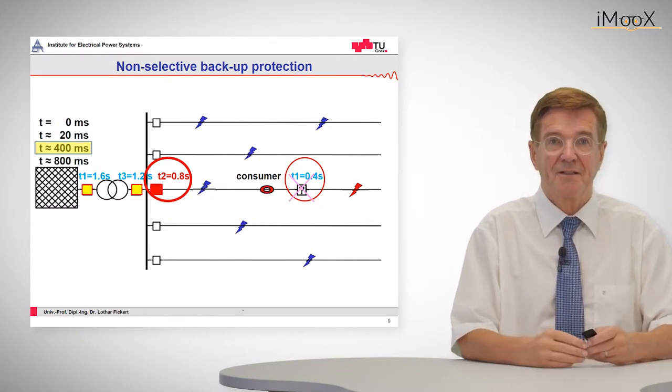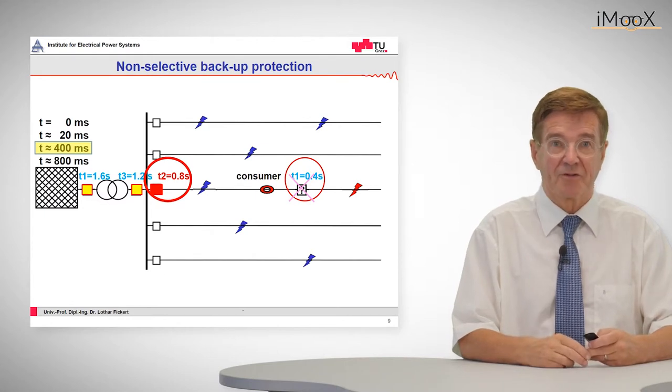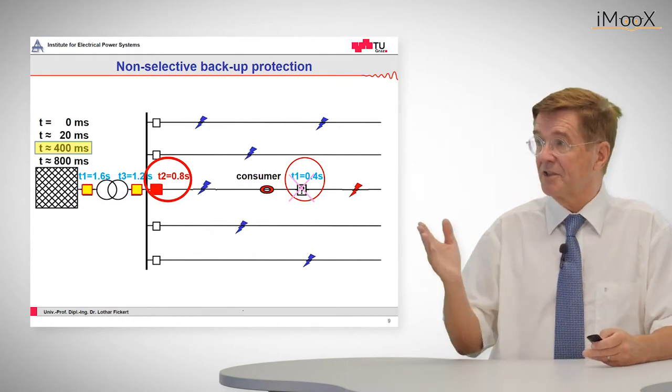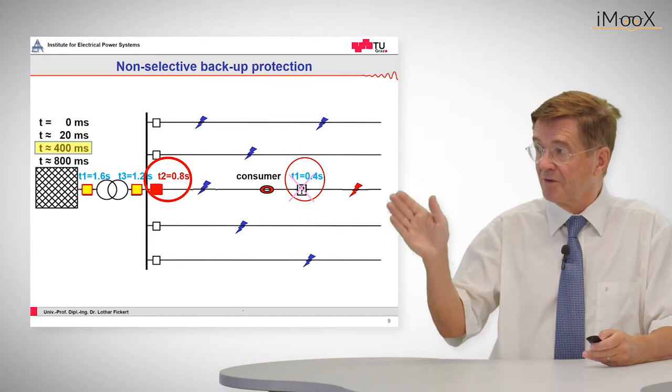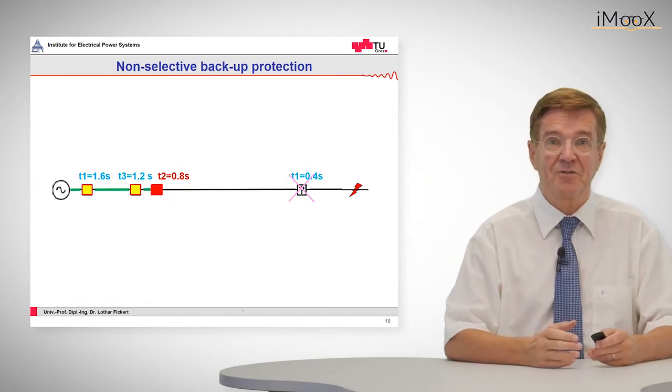So now for the operation people in the control room, they get this impression: pick up, pick up, trip. And now the question is, what could this be?